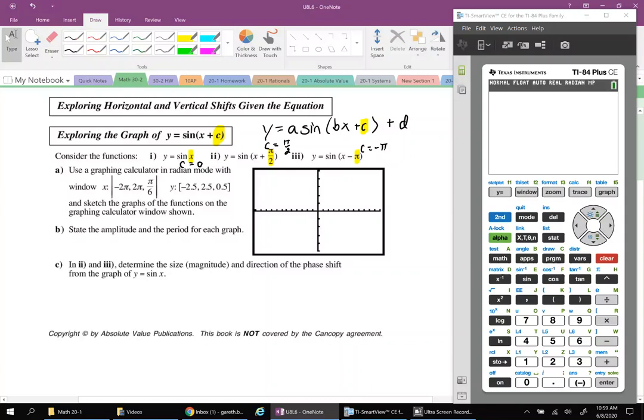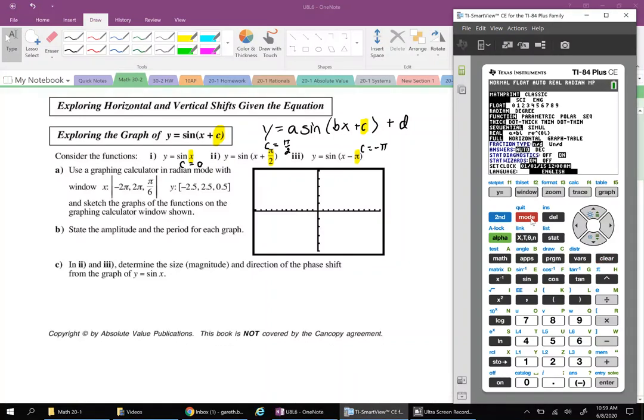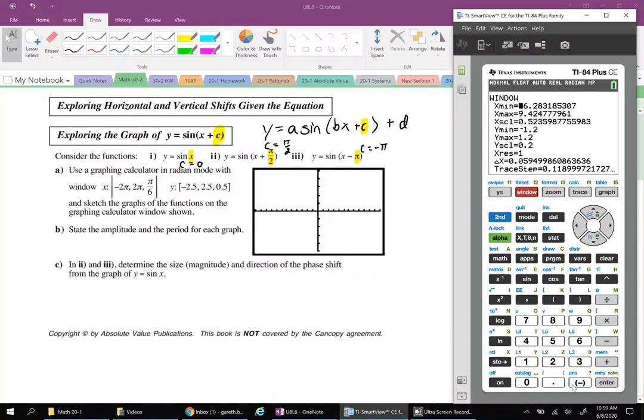Let's graph the following functions using a graphing calculator in radian mode with the window settings that are given. I'm just going to quickly make sure I'm in radian mode, which we are. I'm going to change my window settings. So negative 2 pi, 2 pi, pi over 6, which we remember is 30 degrees in radians, and then negative 2.5, positive 2.5, and we're going up 0.5.